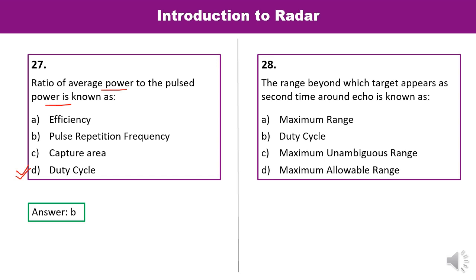Question 28: The range beyond which a target appears as a second time around echo is known as what? This is the maximum unambiguous range. So C is the correct answer.